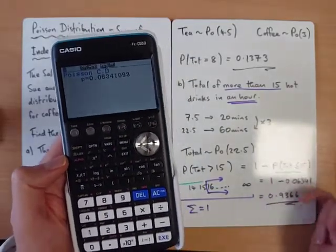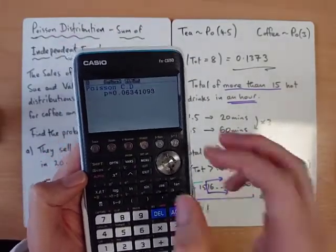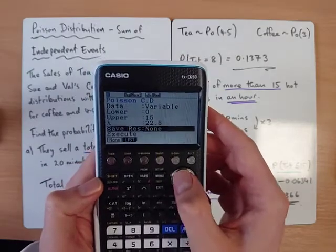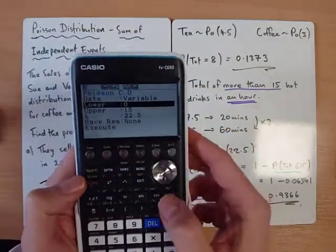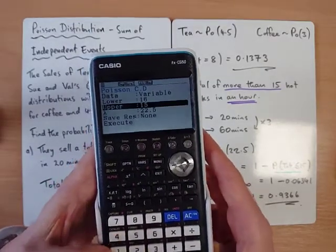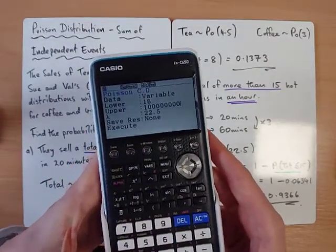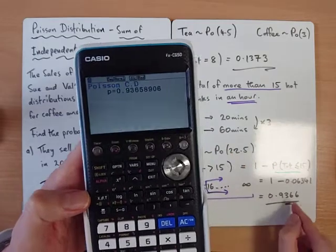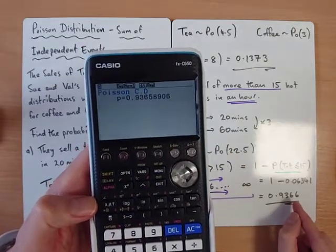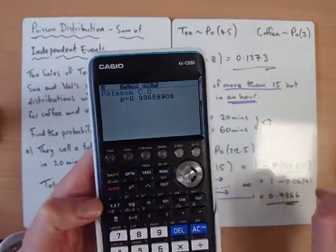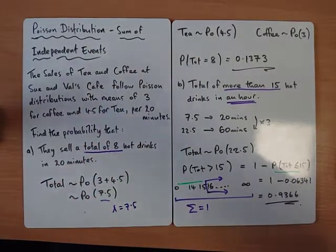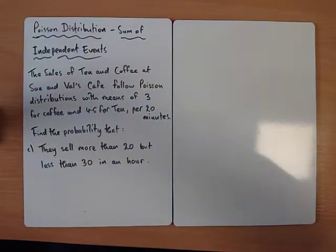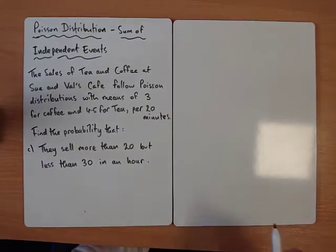So if we do 1 minus this, that would give us 0.9366. Don't forget there is another way of doing it, but you're not showing this method. Another way of doing it, just to get the answer straight away, if you wanted more than 15, your lower would be 16 and your upper would just be like a really big number. And then that gives you the same answer, 0.93658, so we can round to 66.